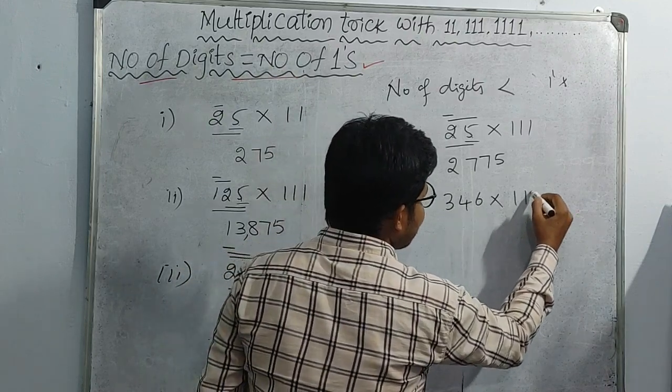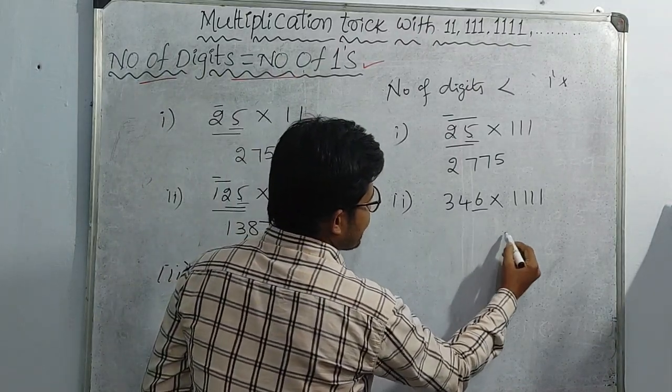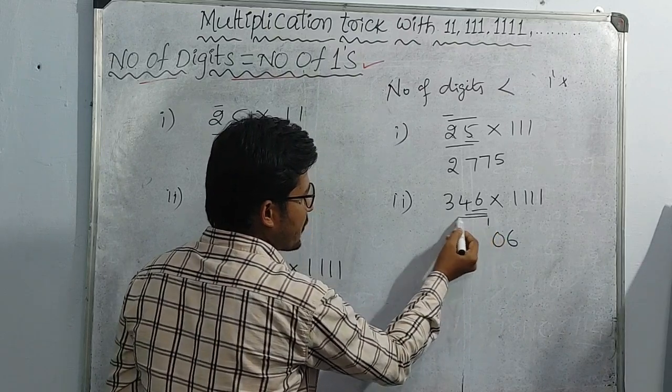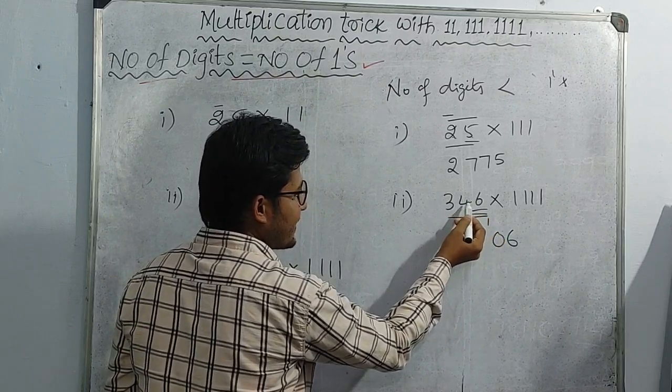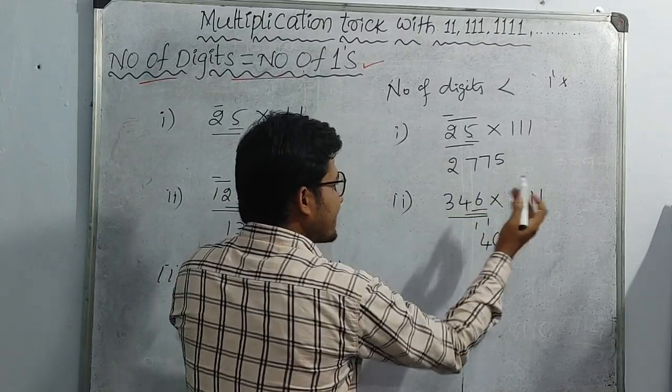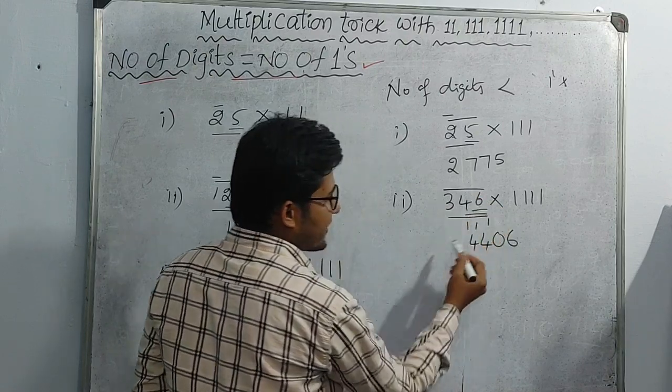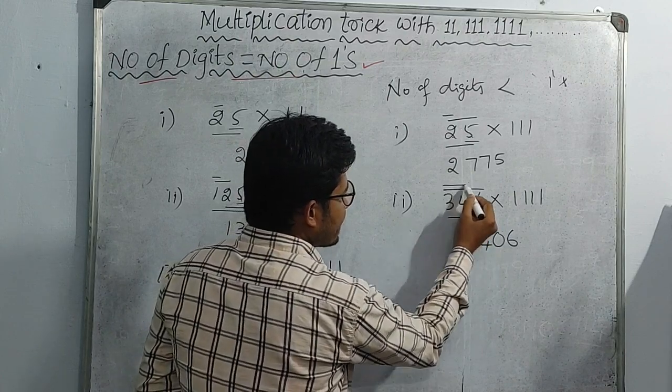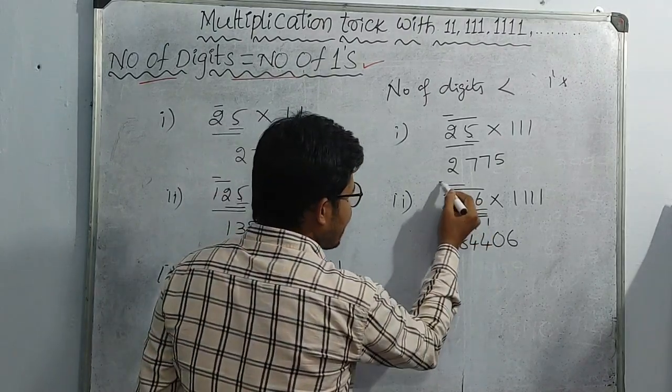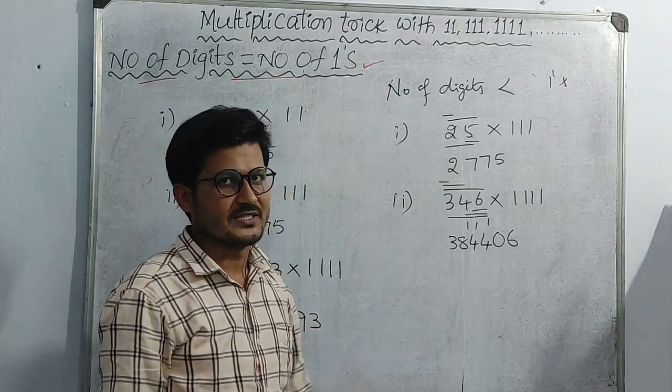Next one: 346 into 1111. Same trick. 6, then 6 plus 4 equals 10, so 1 carry and 0. Then 6 plus 4 plus 3 equals 13 plus 1 equals 14. From left to right: 3 plus 4 equals 7, 7 plus 6 equals 13 plus 1 equals 14. Then 3 plus 4 equals 7 plus 1 equals 8. Finally 3. So 346 into 1111 is 384,406.